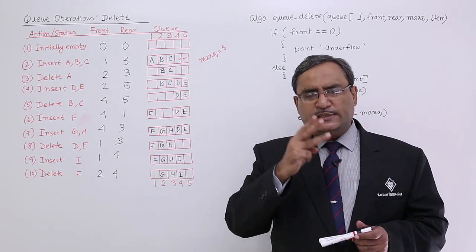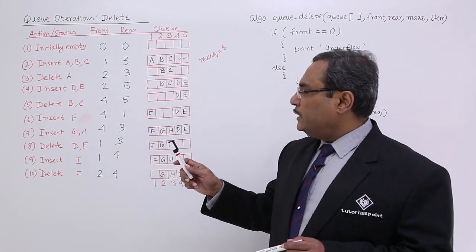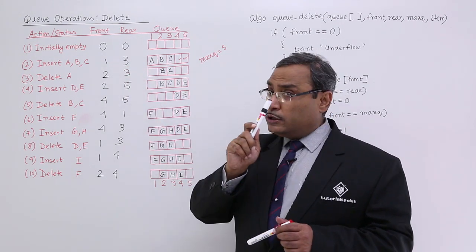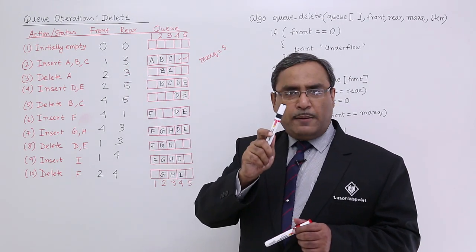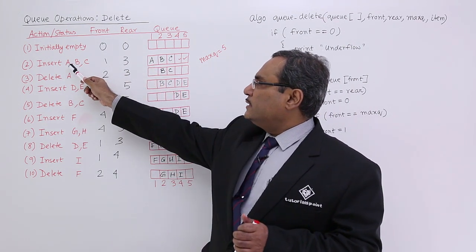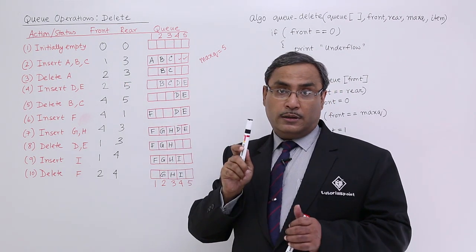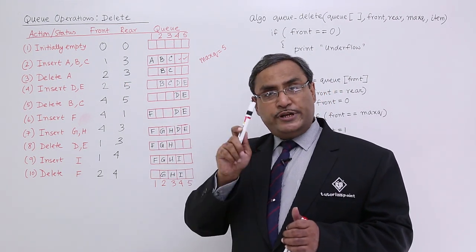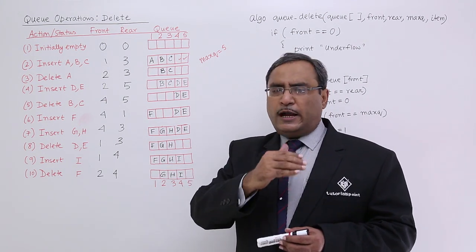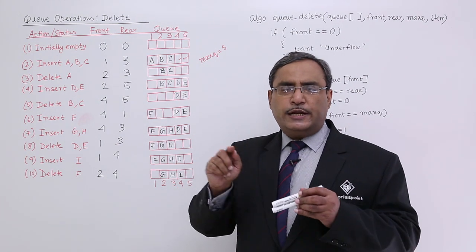Front can have three different situations. Situation number 1: we know that whenever front is equal to rear and not equal to 0, that means we are having a single data. Let us suppose initially I inserted A — in that case front was 1 and rear was 1. So front is equal to rear and not equal to 0 means only one data is there. So if I delete that one, then obviously front will become 0. That is case study number 1.